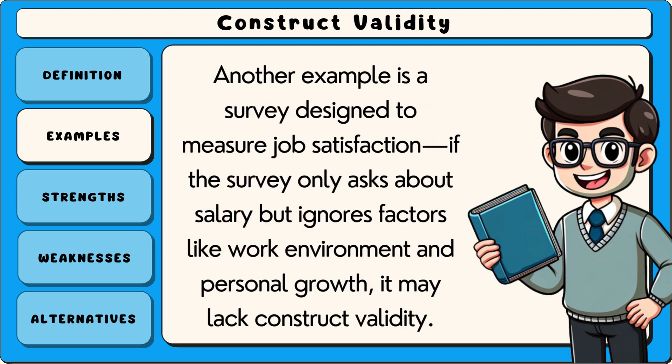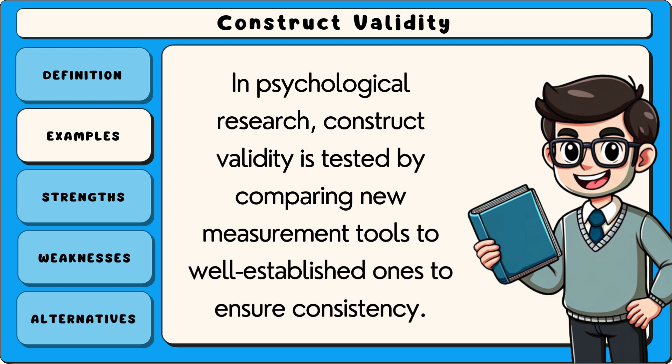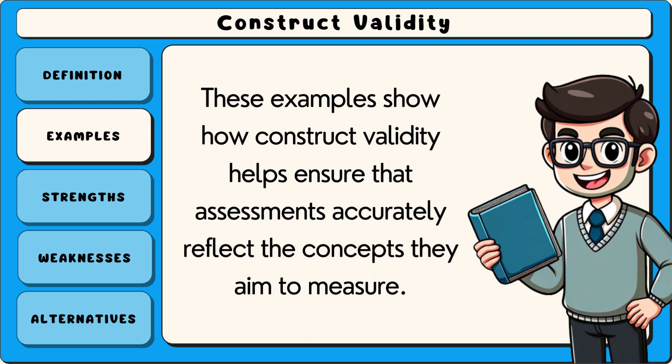Another example is a survey designed to measure job satisfaction. If the survey only asks about salary but ignores factors like work environment and personal growth, it may lack construct validity. In psychological research, construct validity is tested by comparing new measurement tools to well-established ones to ensure consistency. These examples show how construct validity helps ensure that assessments accurately reflect the concepts they aim to measure.